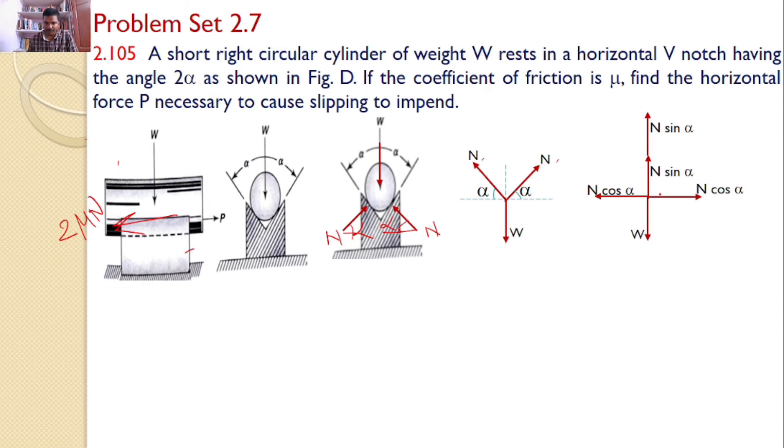So now by applying the equilibrium conditions, we can say Σ Fy = 0. We can say W = 2N sin α or N = W / (2 sin α). These two normal reactions will cancel each other if we consider Σ Fx = 0.